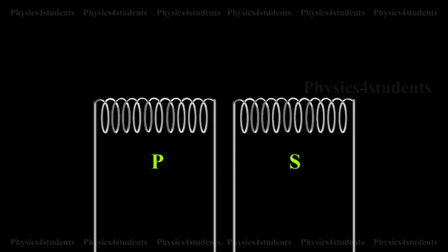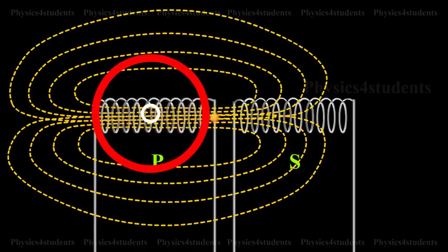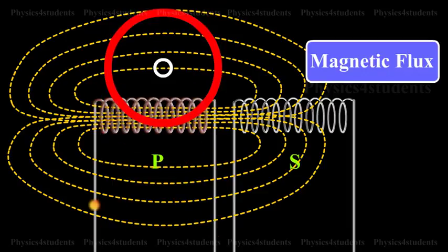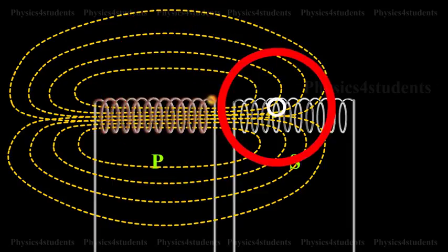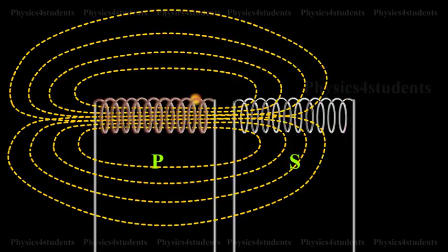The two coils are placed in such a way that they have a common axis. When current is passed through the coil P, the magnetic flux linked with the coil S is large and hence, the coefficient of mutual induction between the two coils is large.